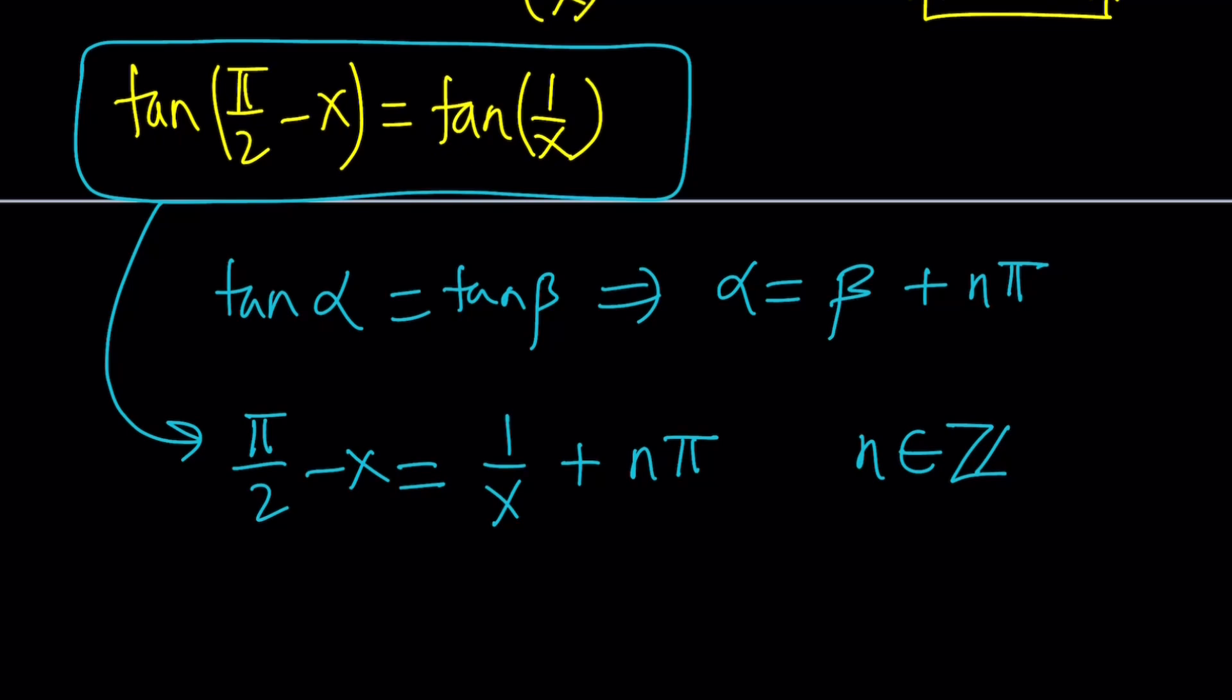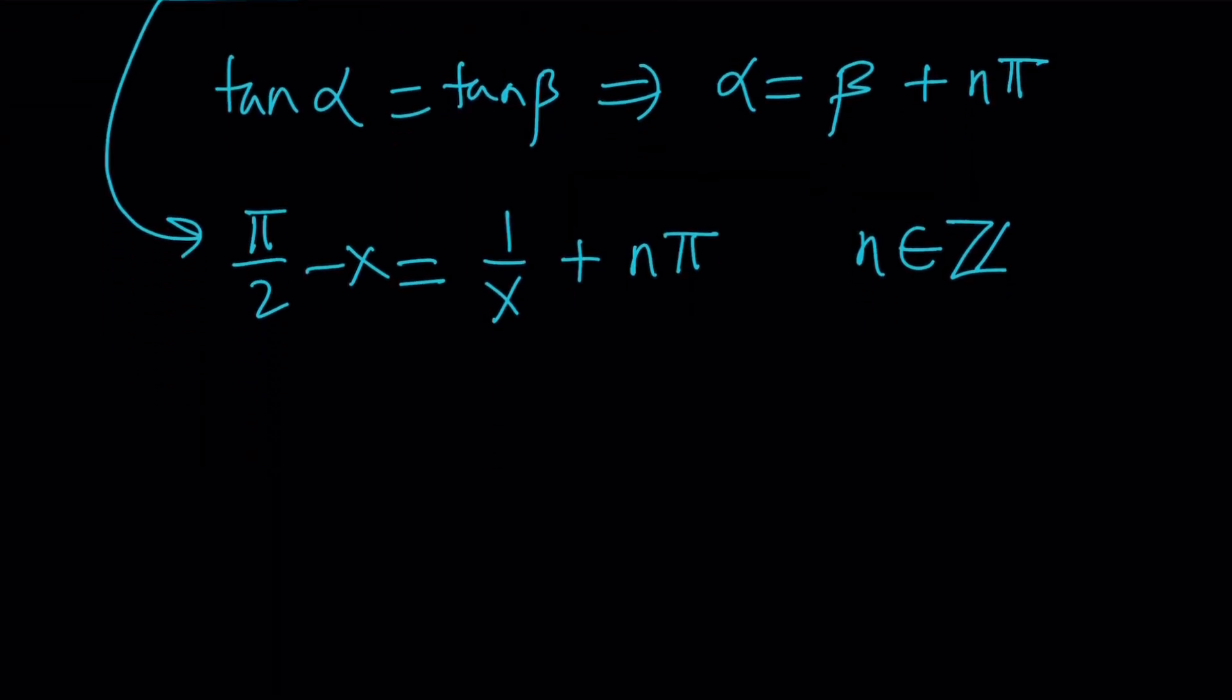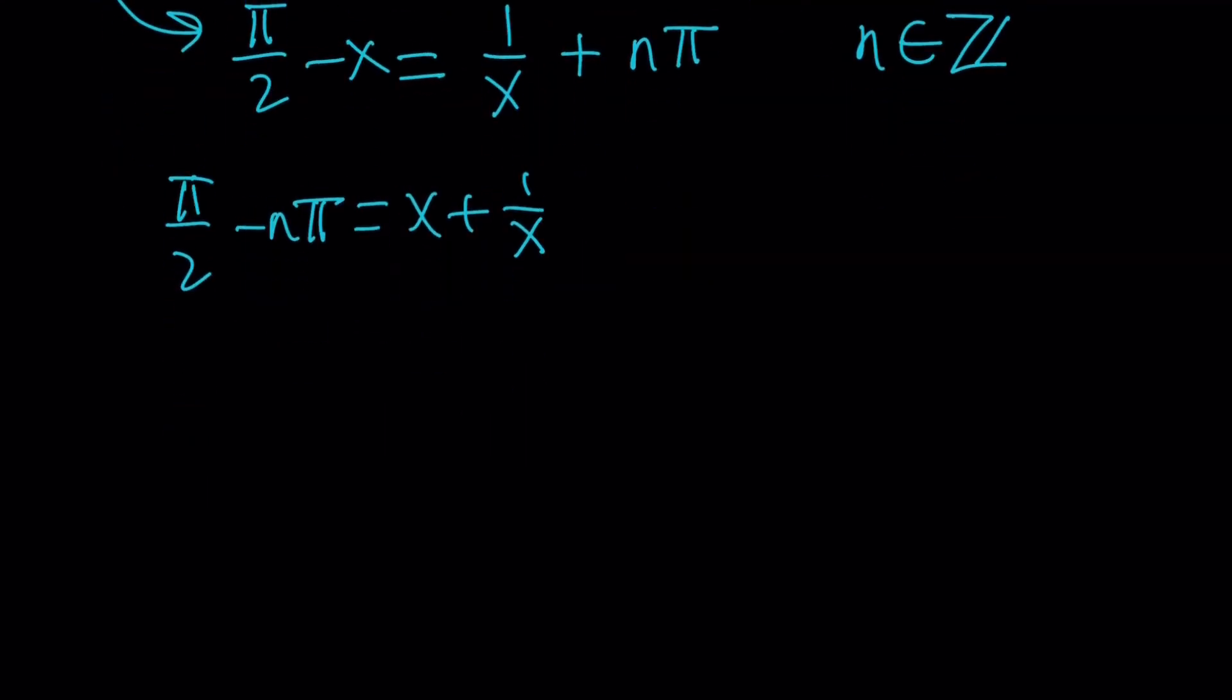Our goal from here is to solve for x. Let's put everything that contains x on the same side, everything else on the other side. So we move the negative x to the right so it's going to be x plus 1 over x here. And then we move the n pi to the left. I'm going to switch sides now because some people write from right to left but for some people it's not normal. Anyways, x plus 1 over x is equal to this.